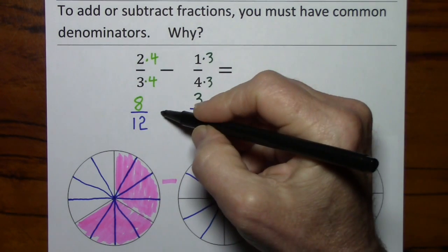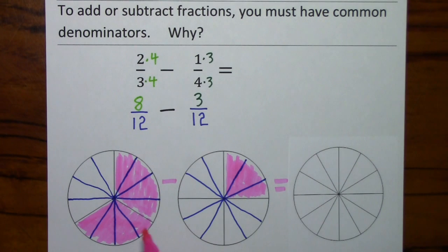Keep this sign. And finishing up with our graphic example, if we're going to subtract 3 from 8, that'll leave us with 1, 2, 3, 4, 5.